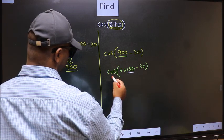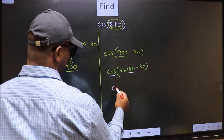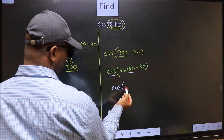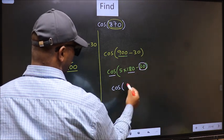Next, here we have 180. So, cos is not going to change. It will remain cos. And inside, we get this angle 30.